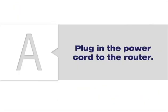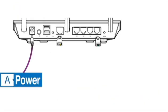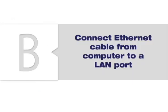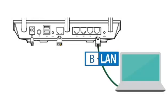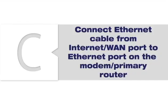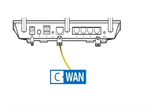Plug the power cord into the router and then an electrical outlet. Connect the Ethernet cable from your computer to the LAN port on the router. Then connect another Ethernet cable from the Internet WAN port to the Ethernet port on your modem or primary router.